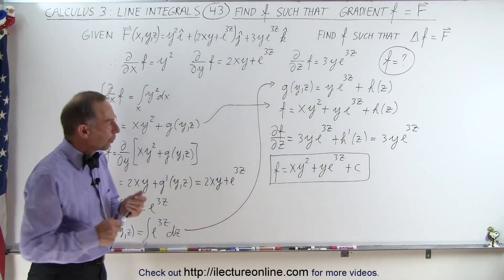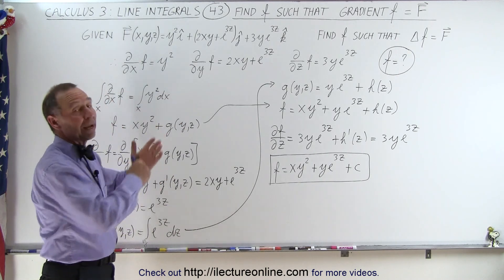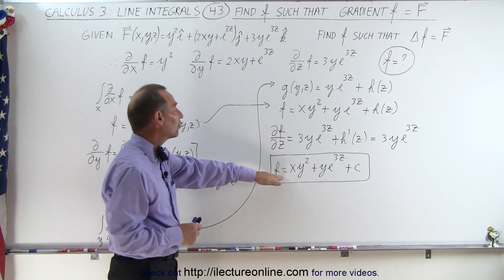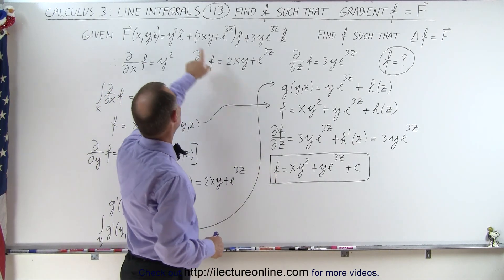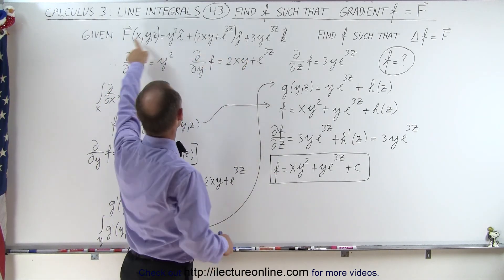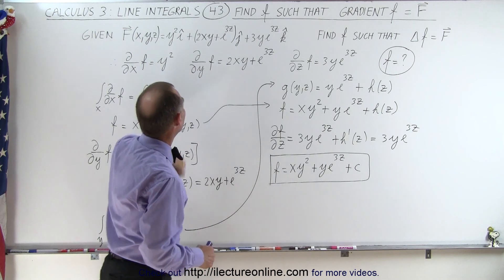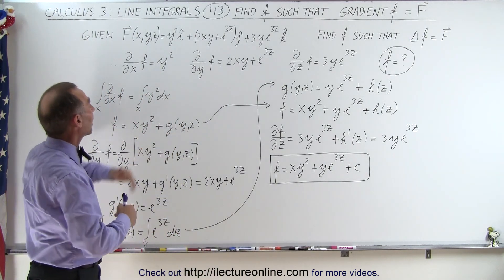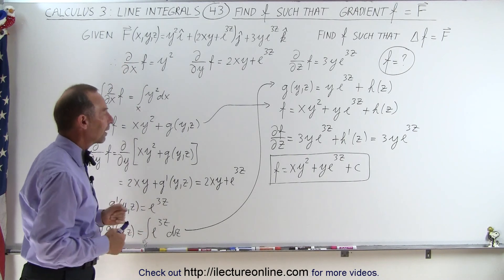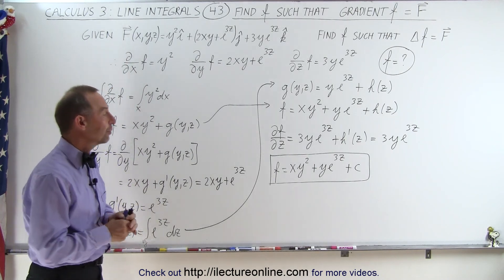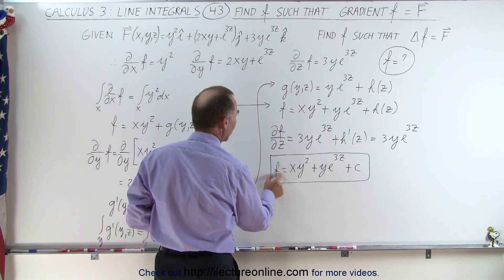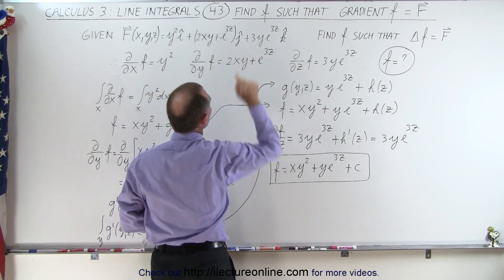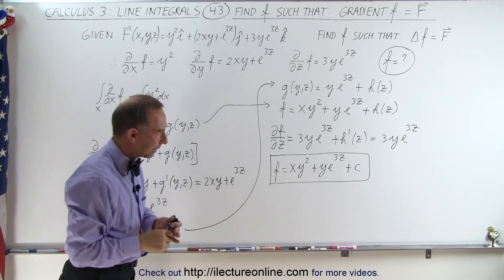So now we need to do one more thing. We think we have the right answer. If this is the right answer, if we take the gradient of this we should get back our original vector field. And if that's correct, then our vector field is a conservative vector field. So we're going to take the partial derivative of this with respect to X, Y, and Z to see if we get the three components and make sure we did this correctly.